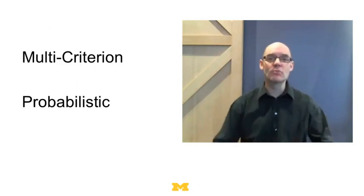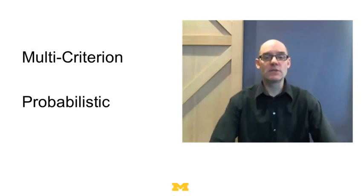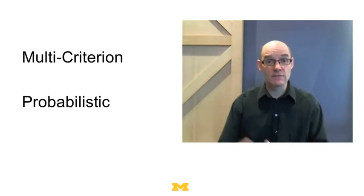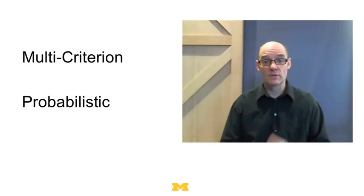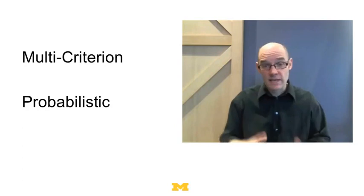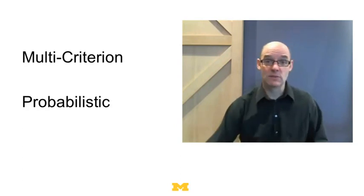We're going to do two broad classes of models. The first are multi-criterion choice models, where there are lots of dimensions and you're trying to weigh one alternative versus another. The second type are going to be probabilistic, where there's some uncertainty out there in the world. You're not sure how it's going to unfold, and so you have to decide how to balance off the risks versus the reward.